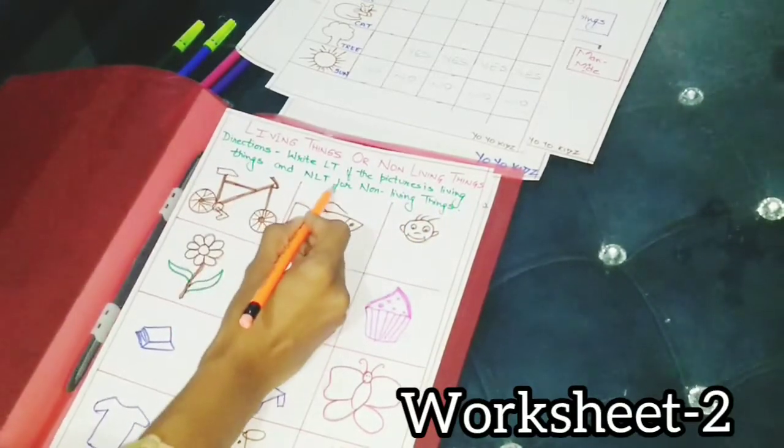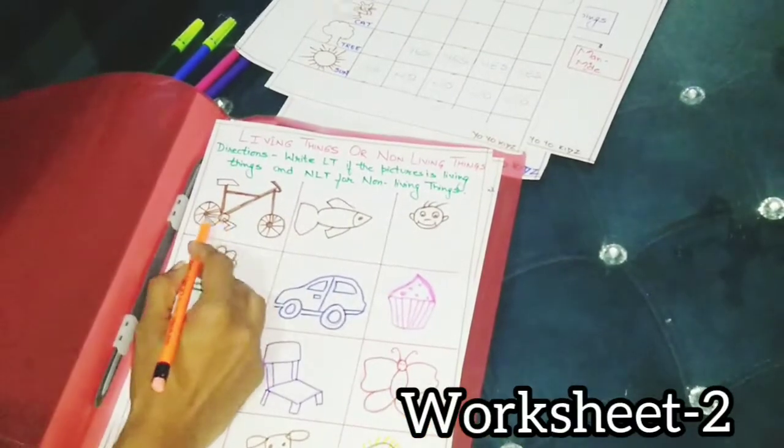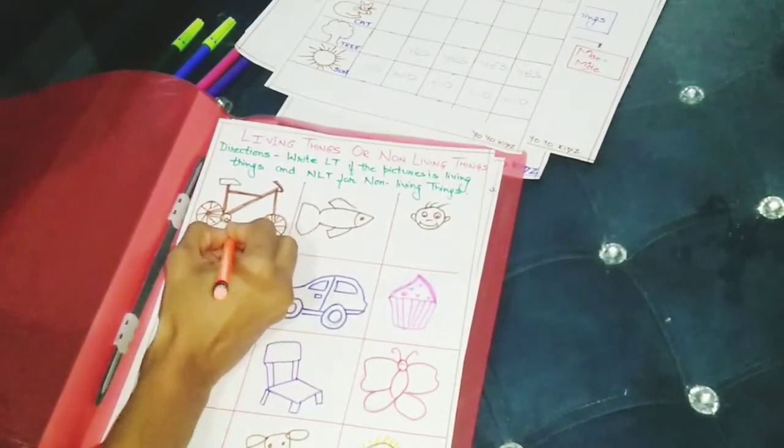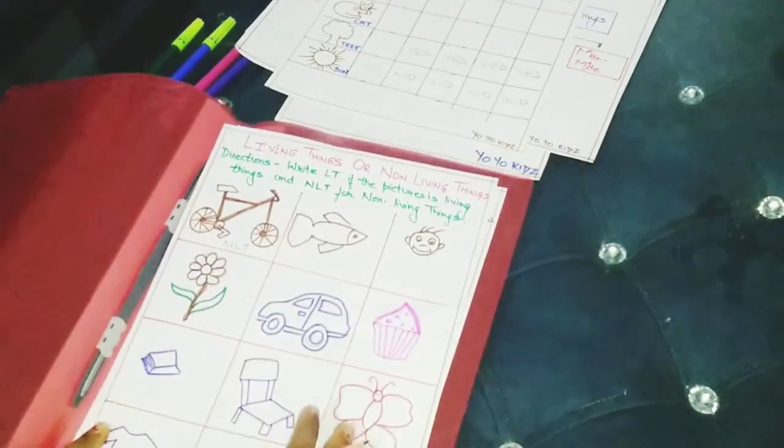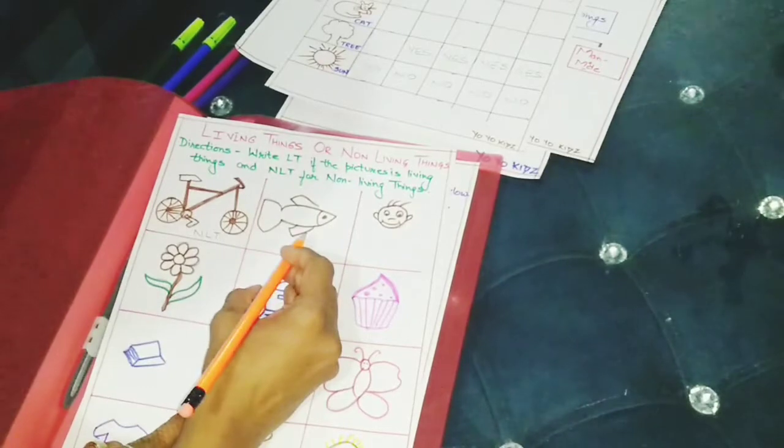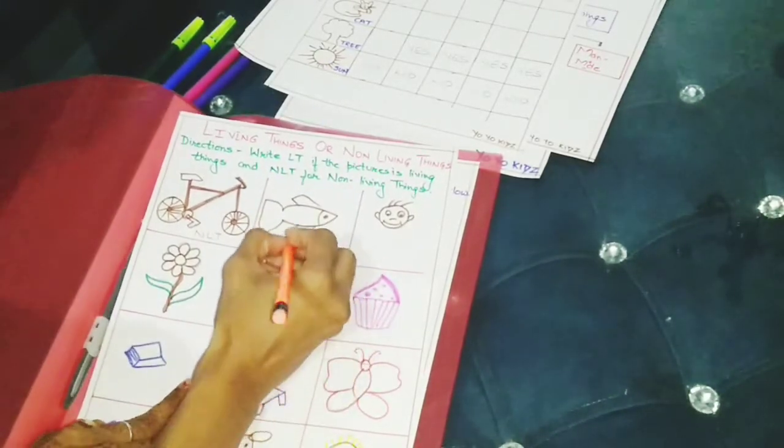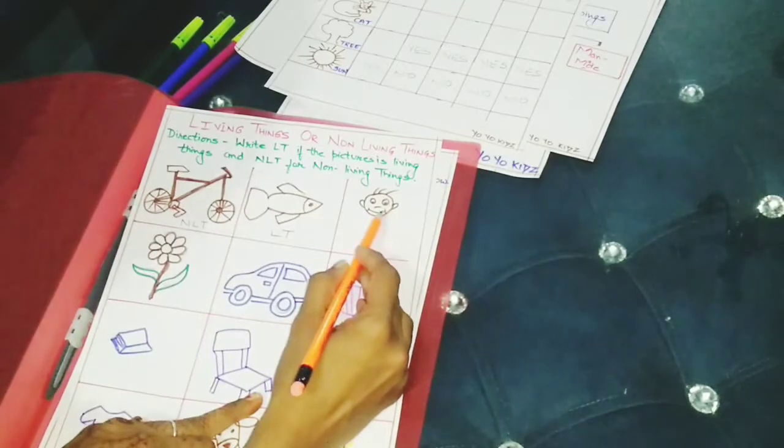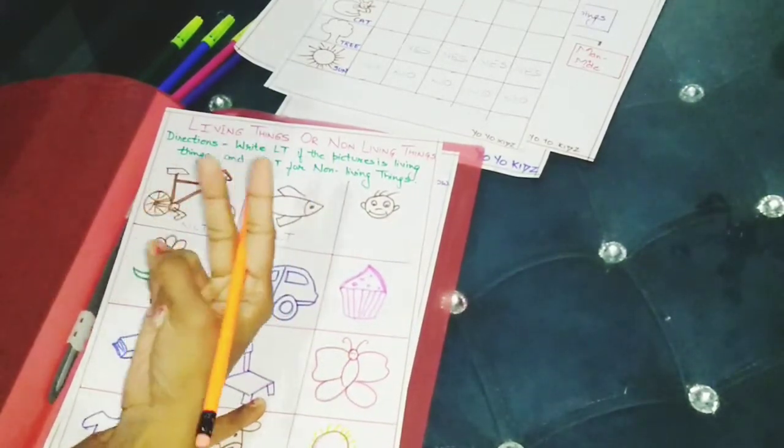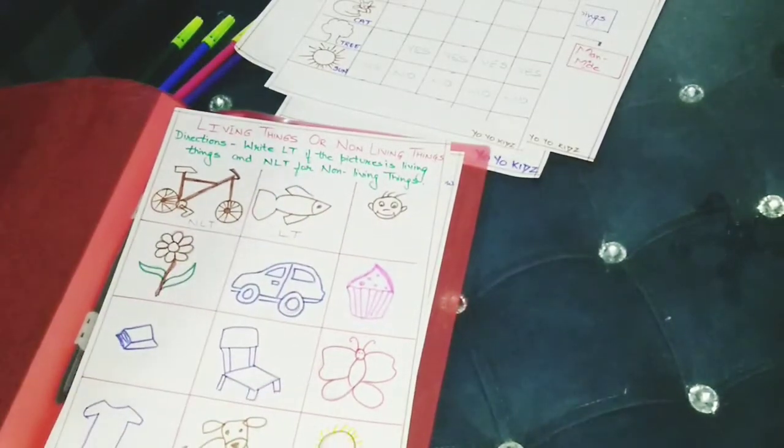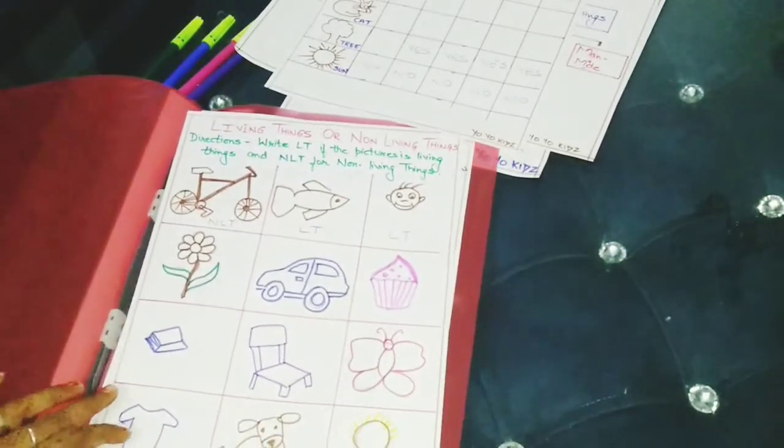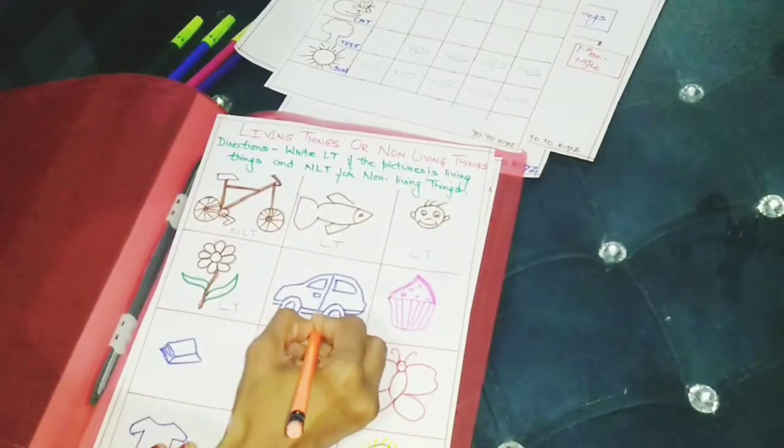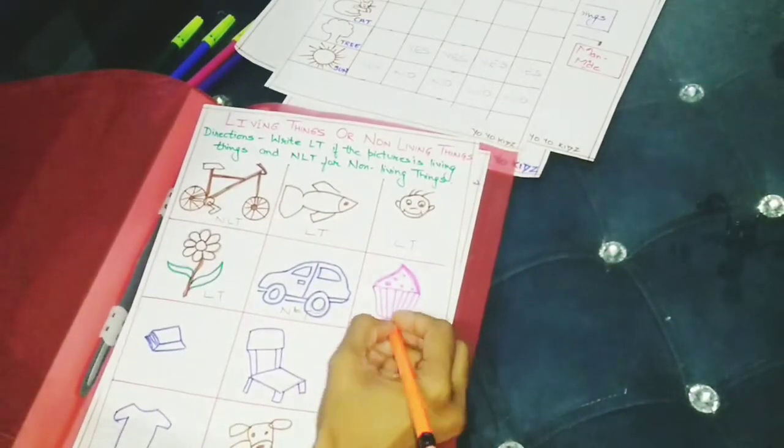So it's a non-living thing. So we will write N-L-T here. Fish. Does fish grow? Yes. Does it move? Yes. It means it is a living thing. We will write L-T. Now it's a boy. Boy is a living thing because it can grow, it can eat, drink and move. So it means it is a living thing. Flower. Flower is a living thing. Car. Car is a non-living thing. Cupcake. Cupcake is a non-living thing.